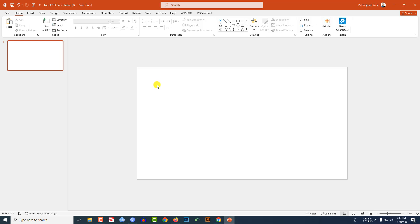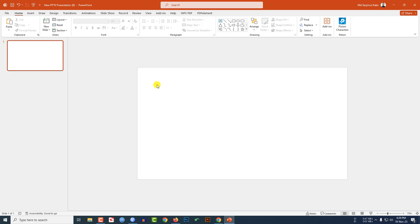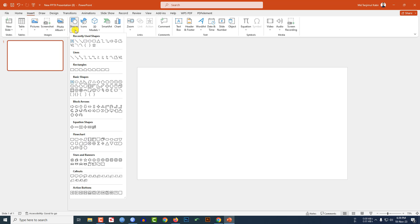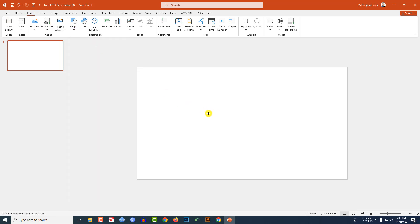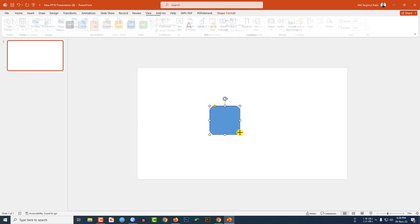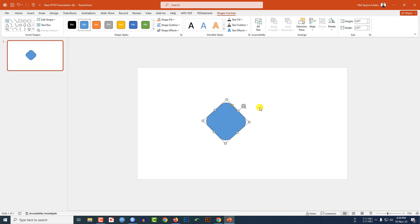I have already taken a blank slide. Go to Insert, go to Shape, and pick a rounded corner rectangle shape. Hold down the Shift key and drag it. Use the yellow point to make it sharper, and use this handle to rotate it. Now press Ctrl+D to duplicate it.